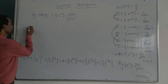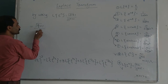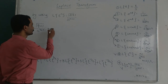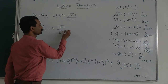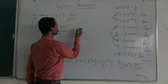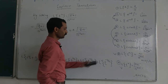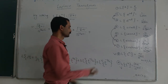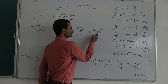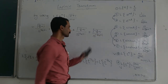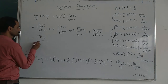Applying the formula to each term: Laplace of t^(3/2) is gamma(5/2) upon s^(5/2). For 3 times Laplace of t^(1/2): 3 times gamma(3/2) upon s^(3/2). For 3 times Laplace of t^(-1/2): n equals minus 1/2, so gamma(minus 1/2 + 1) equals gamma(1/2), giving 3 times gamma(1/2) upon s^(1/2). For Laplace of t^(-3/2): n equals minus 3/2, so gamma(minus 3/2 + 1) equals gamma(minus 1/2), giving gamma(-1/2) upon s^(-1/2).